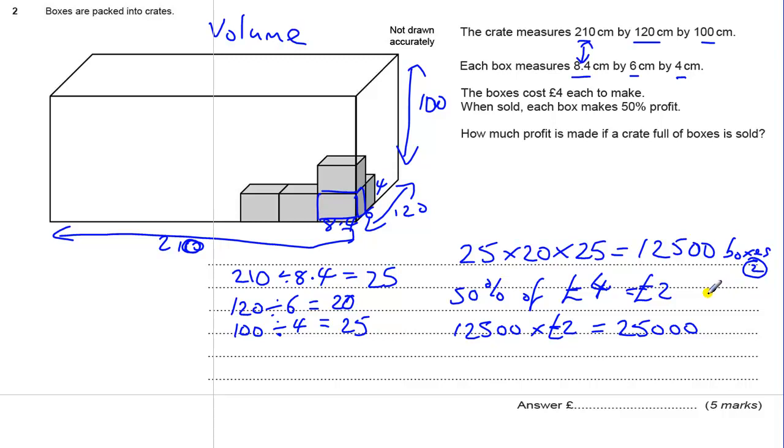Each of these steps, you get an extra mark for the £2 being seen. Or if you did it slightly differently, you worked out the total cost for each box. So you added the 50% onto the 4 to make £6. That will give you an extra mark for the number 6 being seen or the number 2 being seen. Then there's a method mark for doing this calculation when you're multiplying it up. And then there's an answer mark for the 25,000.